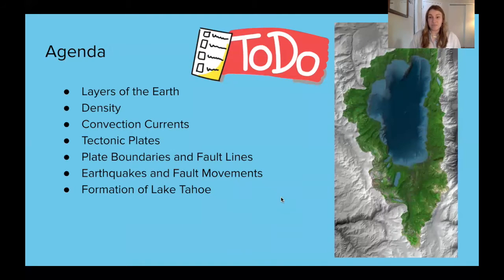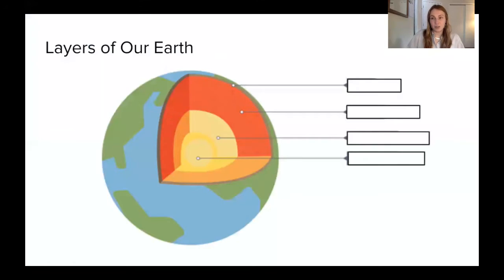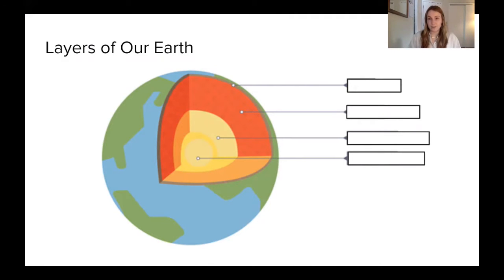We're going to be covering a lot of things that help us understand what's happening right here in the Lake Tahoe Basin. Starting off our field trip, we're going to jump right in to talking about the layers of our earth. We have four layers that geologists have named, and we're going to go through each layer one at a time so that we can understand the name of the layer, but also whether that layer is a solid or a liquid, because that will help us understand why those layers behave in certain ways.